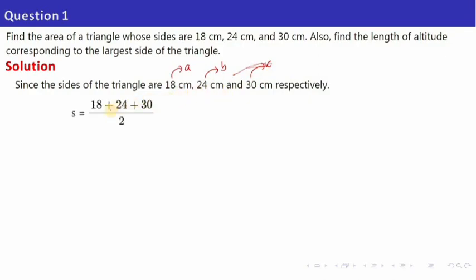Now let's calculate the semi-perimeter. Semi-perimeter is A plus B plus C, all divided by 2. When you add them and divide by 2, you get 36. So semi-perimeter is 36. Now you have got semi-perimeter and the values of A, B and C. Since you know three sides, you always need to make use of Heron's formula.